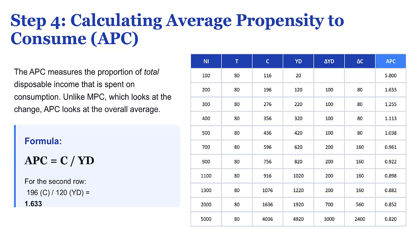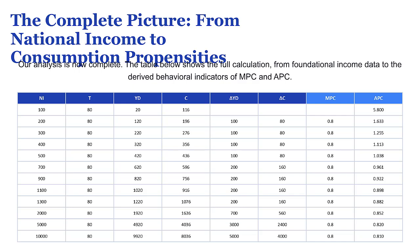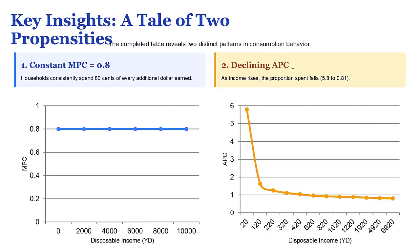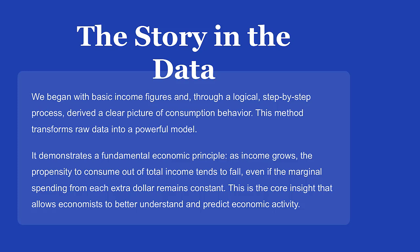Let's do a quick recap of our journey. We started with all the income in the economy, subtracted taxes to find disposable income, then zoomed in on the changes between different income levels. By dividing the change in spending by the change in income, we found our magic number — 0.8 — which simply means 80 cents of every new dollar gets spent. This idea works for individuals too: if you got an unexpected hundred bucks tomorrow, how much would you spend and how much would you save? That ratio is your personal MPC. Thanks for joining us.